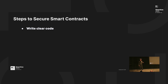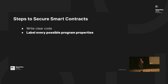Steps to secure smart contracts: the first important step is to write clear code, which is fairly obvious. But the more important step is that you have to label every possible program property. This is because bugs happen when the specification in your mind does not match with what you write. One way to handle this is to list out every possible program property and check whether the code you write satisfies that property.